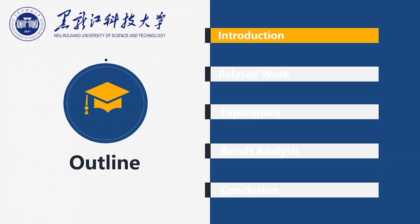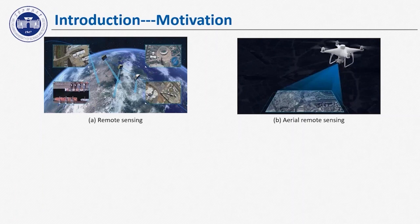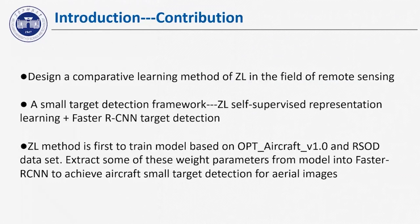I will introduce our motivation and contributions. The emergence of remote sensing expands human knowledge of their living environment. Aerial remote sensing has the advantage of macro technology, large image scale, and high ground resolution, providing a new way for ground target detection. Aircraft plays an important role in transportation. Target detection using convolutional neural networks is one of the most challenging problems in computer vision. Large-scale datasets are required for training, and the degree of model fit is affected by the increase of labor in training sets. The production of labels for large-scale datasets is time-consuming and expensive. Therefore, our research uses a self-supervised learning method to detect aircraft.